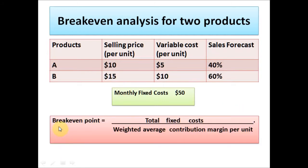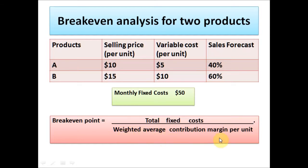The formula to calculate the breakeven point is: you take total fixed cost and divide it by the weighted average contribution margin per unit. From the given information, we know that the fixed cost is $50, but we need to find out what the weighted average contribution margin per unit is.